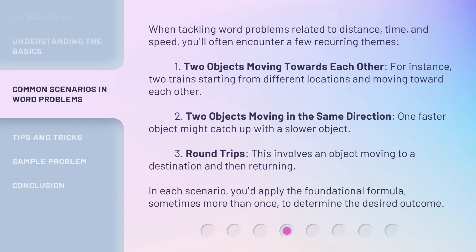When tackling word problems related to distance, time, and speed, you'll often encounter a few recurring themes. First, two objects moving towards each other — for instance, two trains starting from different locations and moving toward each other. Second, two objects moving in the same direction, where a faster object might catch up with a slower one. Third, round trips, which involve an object moving to a destination and then returning. In each scenario, you'd apply the foundational formula, sometimes more than once, to determine the desired outcome.